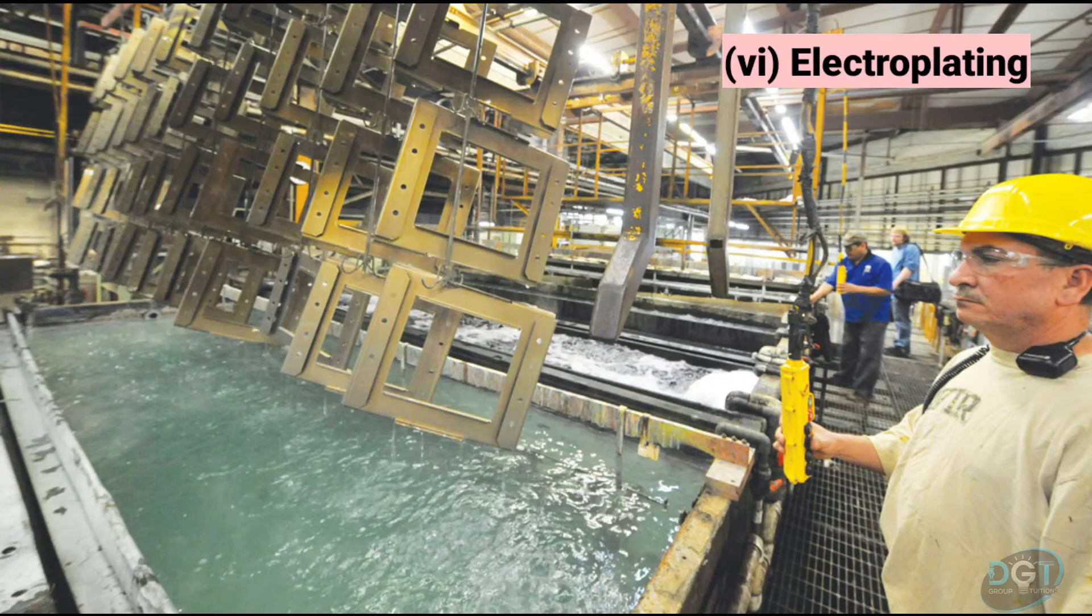Number six, electrolysis is done for coating one metal on another. This is also known as electroplating. In this process, we coat an inferior metal with a superior metal by electrolysis to protect the superior metal from corroding.